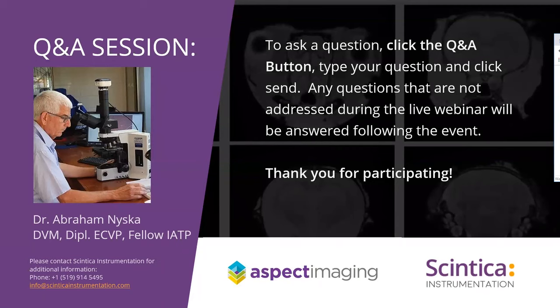We do have lots of questions here, and certainly we'd appreciate more. At any point in time, submit your questions through the Q&A dialogue and we'll get to as many as possible. The first question is: you mentioned in your seminar, Dr. Niska, that the tissues are transferred to fluorinert for the MR scanning. Do you envision any damage to the quality of the histology sections used at a later stage for histological validation?